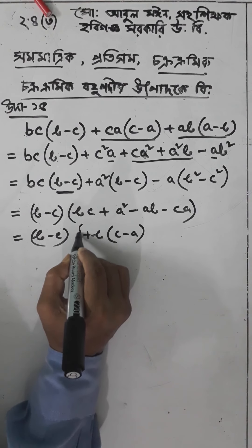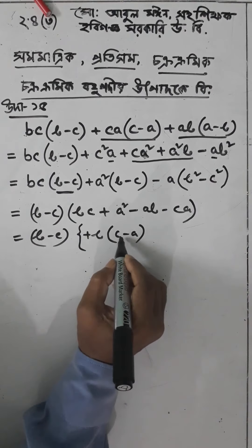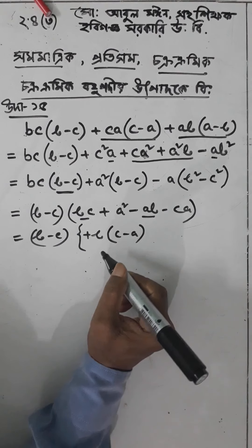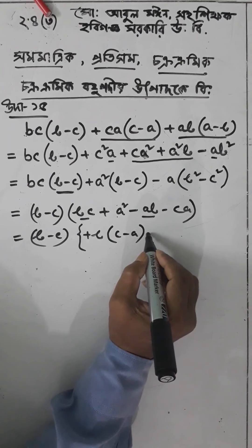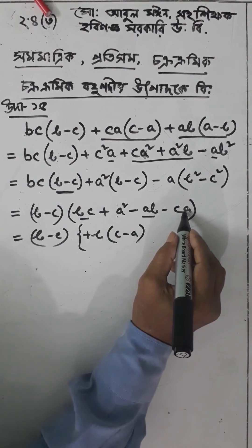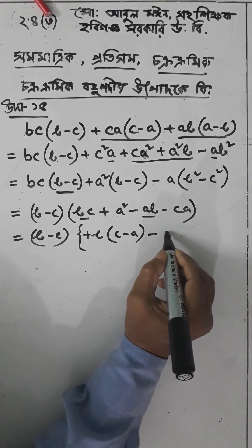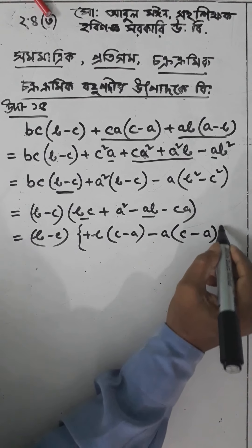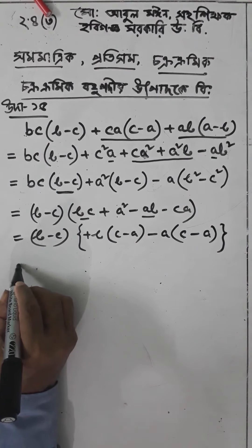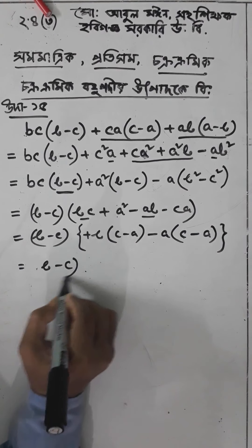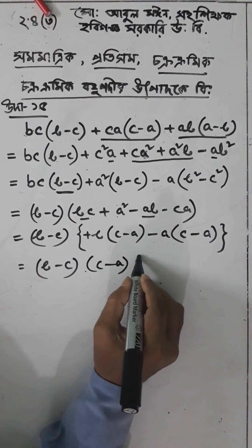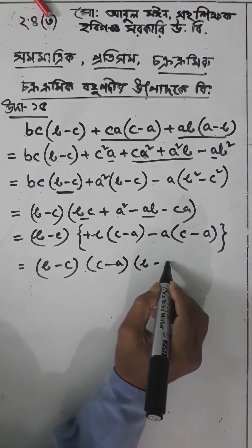Taking b common gives c minus a. Taking minus a common gives c minus a. This equals b minus c into c minus a common, which gives b minus a.